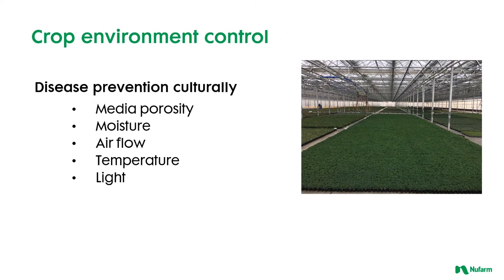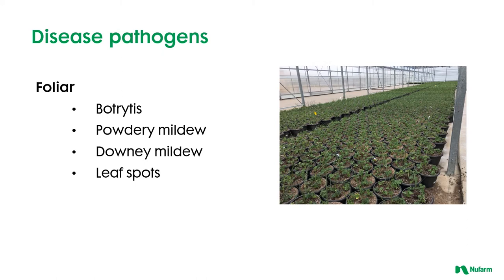The next step is controlling the environment through cultural activities, which include reviewing media porosity, moisture levels, airflow around the plants, temperature, and light levels. The water molds — Pythium, Phytophthora, Rhizoctonia, and Thielaviopsis — will still affect plants at this growing stage, but are less of a concern as the crop grows larger.